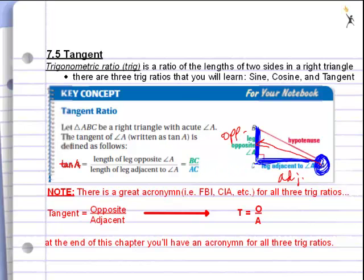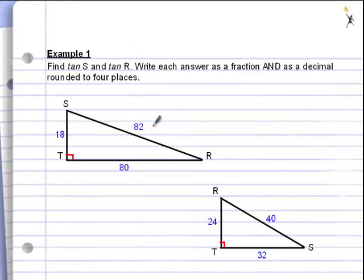Right now, we're going to use tangent just to get you started on finding angles. If you look at example one, we're told to find the tangent of S and the tangent of R. Those could also be written as the tangent of angle S and the tangent of angle R.